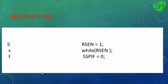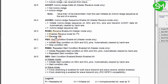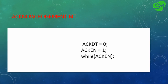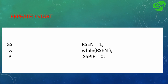For establishing a repeated start the process is the same. We set the RSEN bit from the SSPCON2 register — that is the repeated start condition enable bit. This is also automatically cleared by hardware, so we wait for this bit to go low. Once it goes low we clear the SSPIF flag from the PIR1 register.